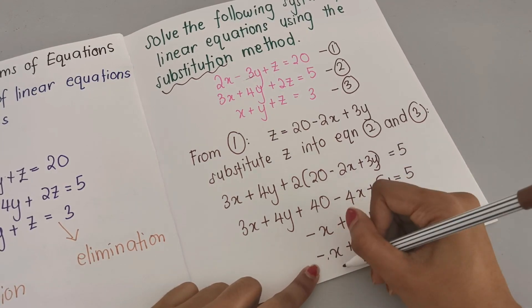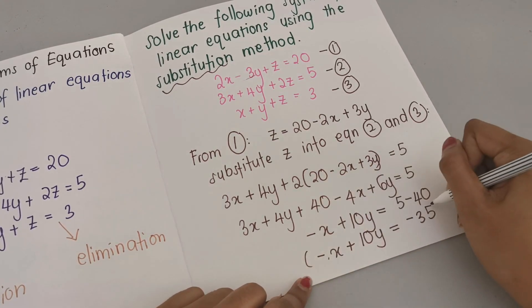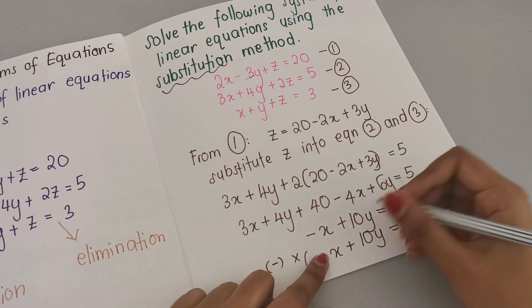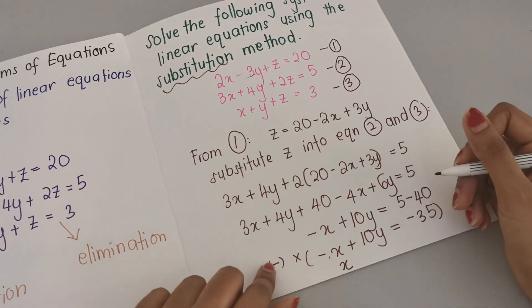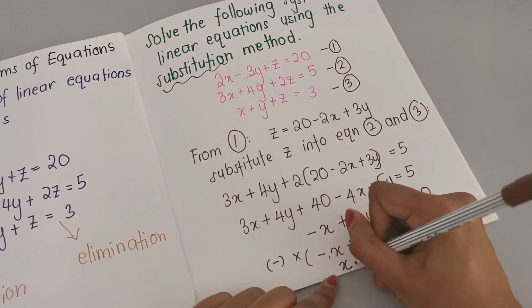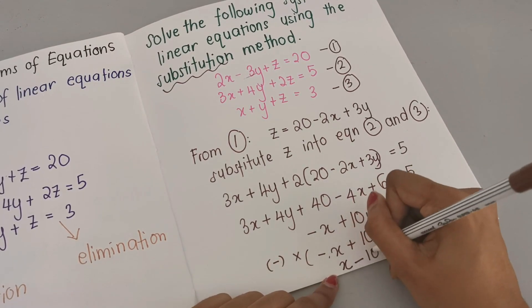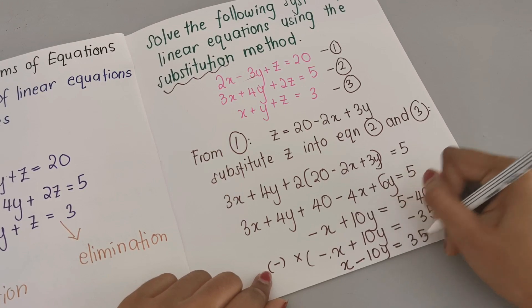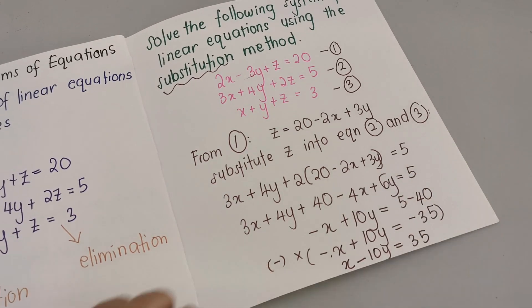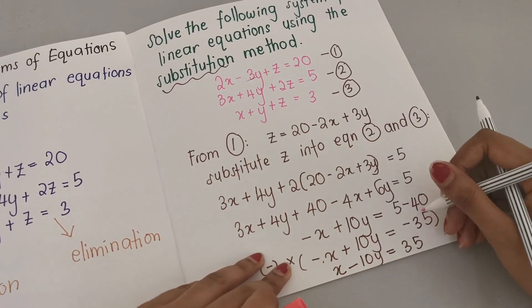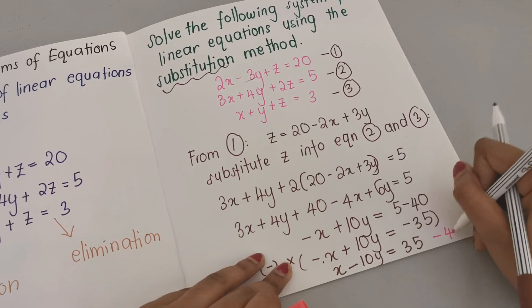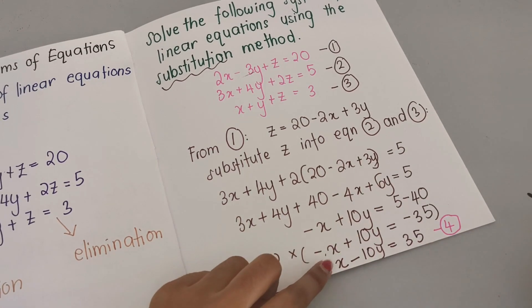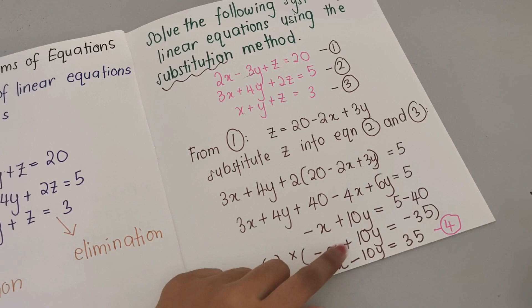I don't want a negative coefficient for x, so I'll multiply the entire equation by negative 1. This gives x minus 10y equals 35. This becomes equation 4 — a new equation in terms of x and y only, with no z.